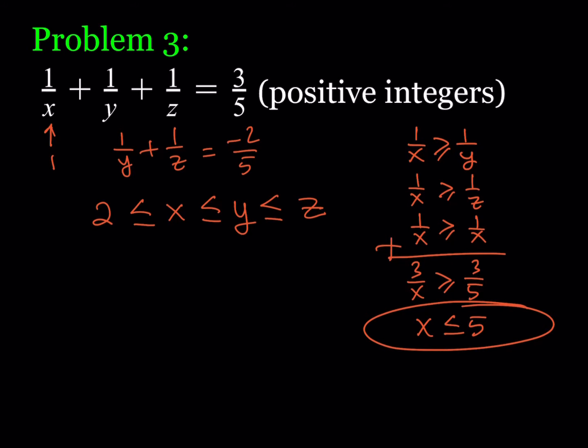So x has an upper bound of 5, and we know x ≥ 2, meaning x is between 2 and 5. We'll look at it case by case. What if x = 2?